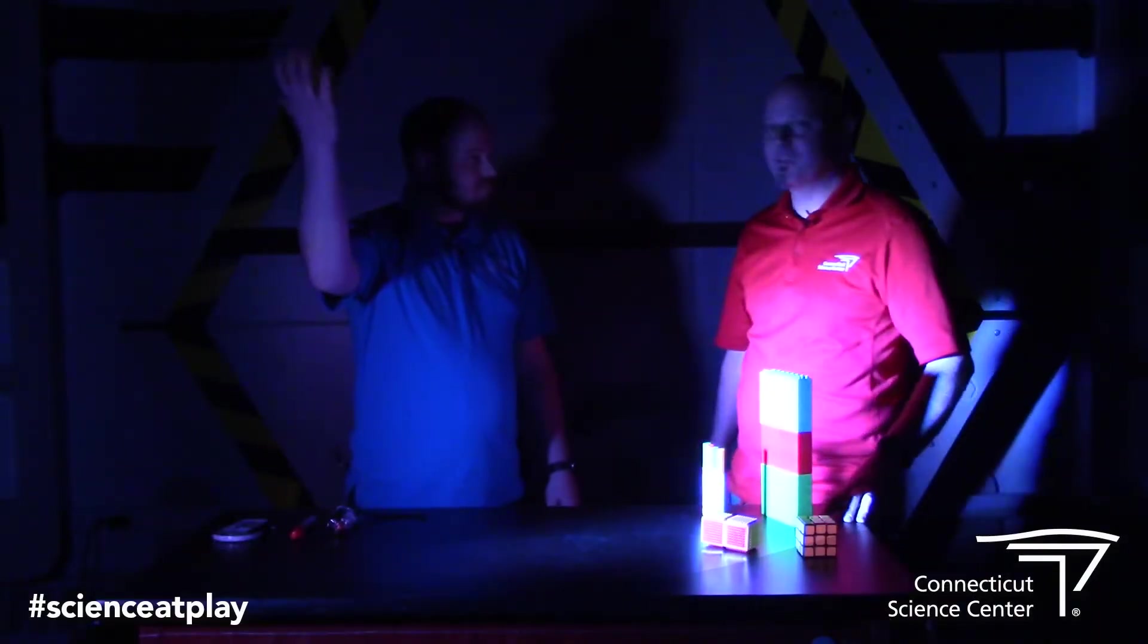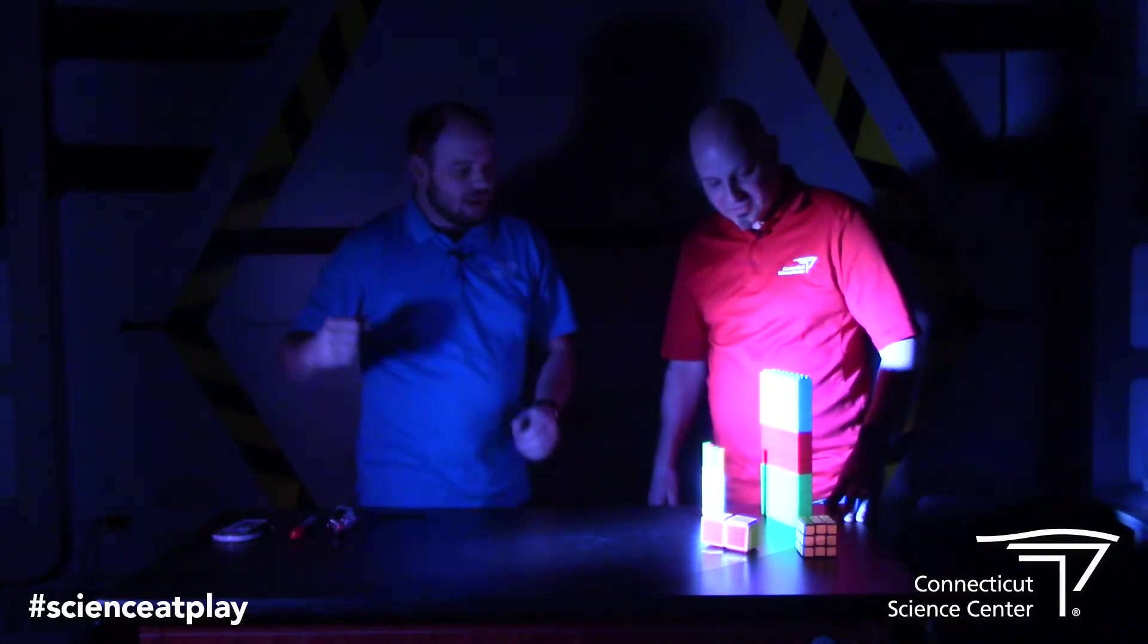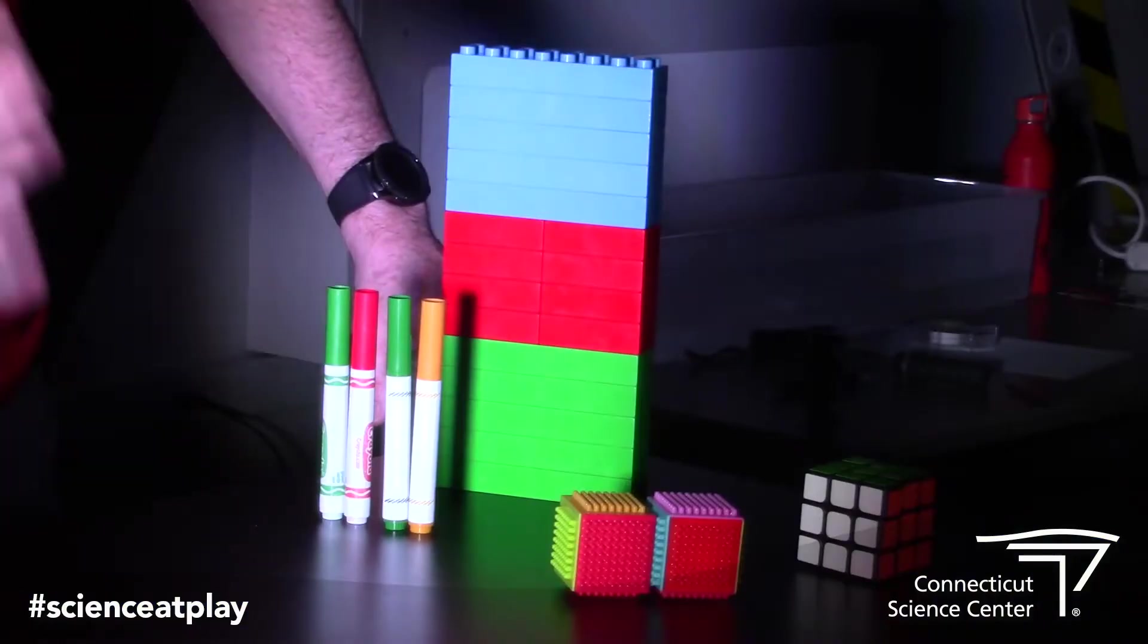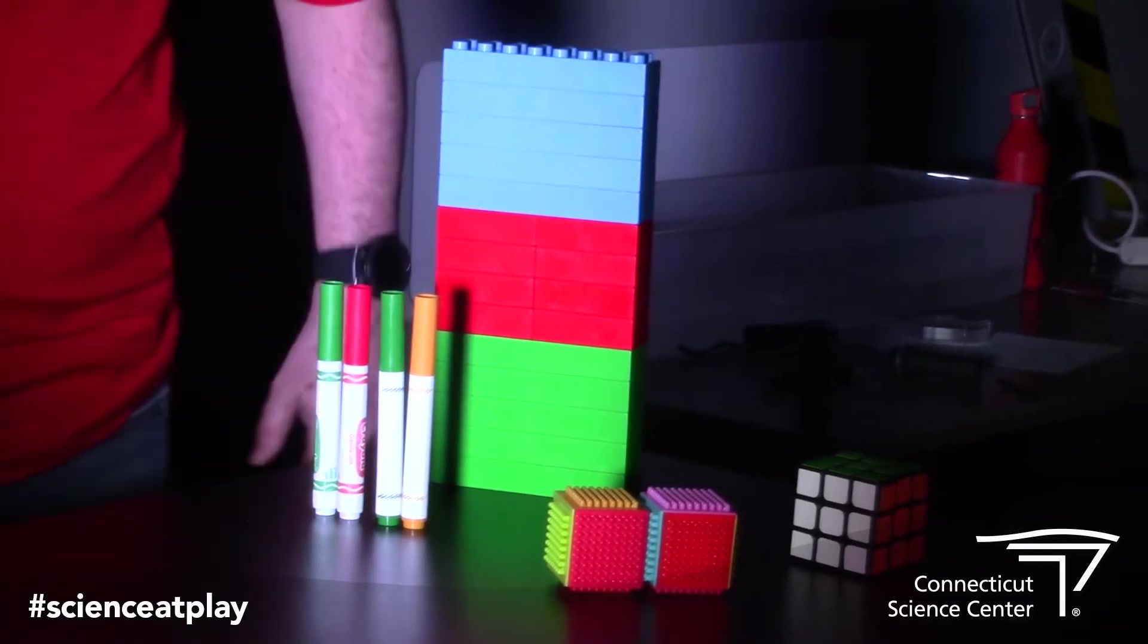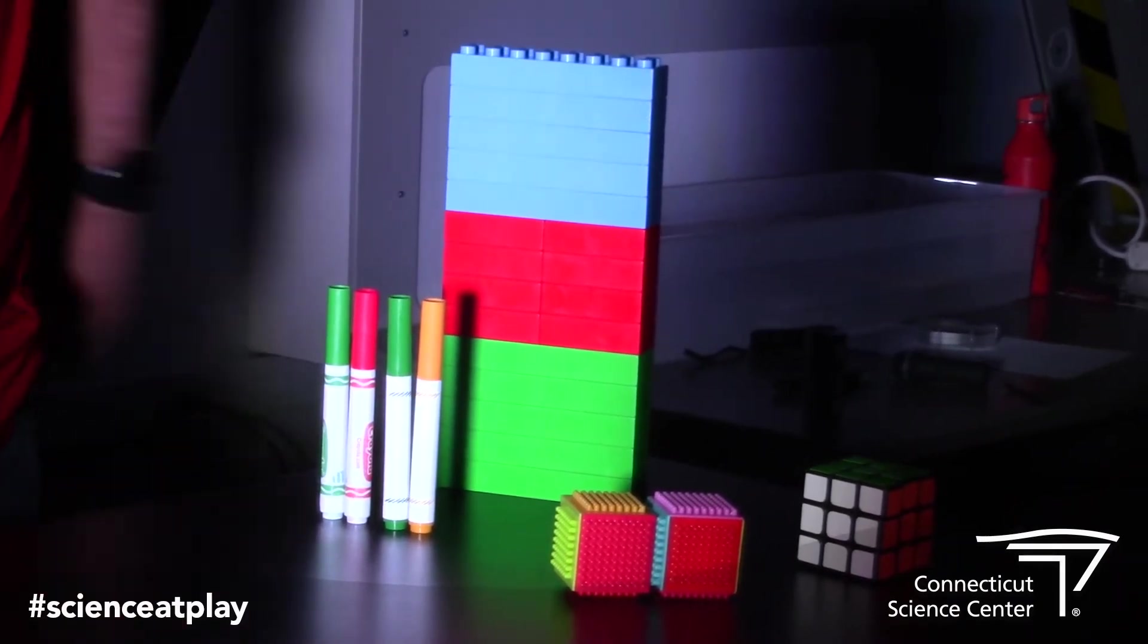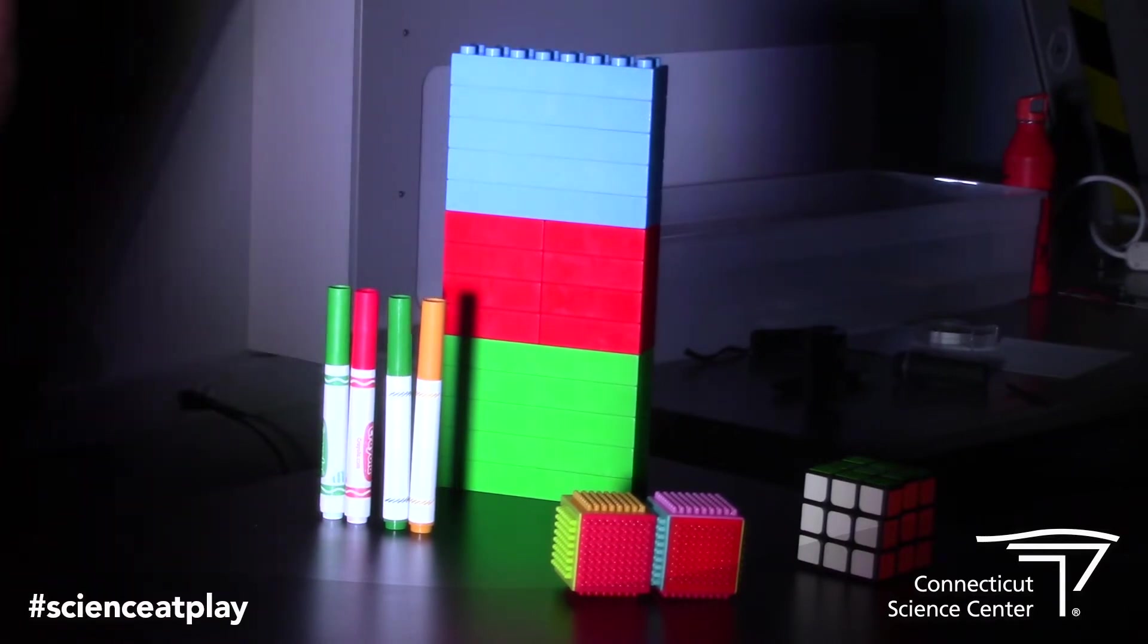All right. That was quick. So right now I have a lot of colors going on to this, so we're seeing the normal colors that we would. Yeah, I still see blue, red, and green. But what I can do is I can turn off some of those colors.